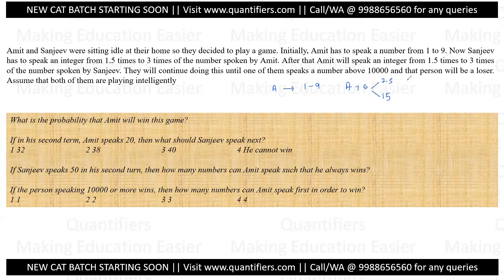Let us say Amit has spoken 5, then Sanjeev has liberty to speak any number from 7.5 to 15, because minimum is 1.5 times, maximum is 3 times. Now again Amit has to speak any number from 1.5 to 3 times of what Sanjeev spoke. The game will keep on continuing in this way. The person who speaks the number above 10,000 will be a loser.